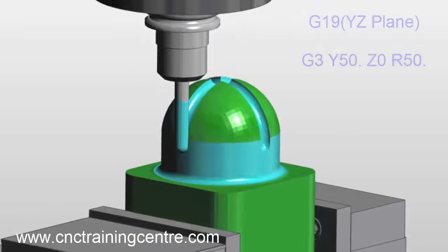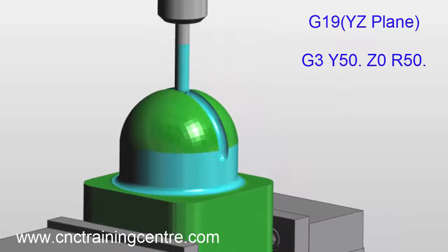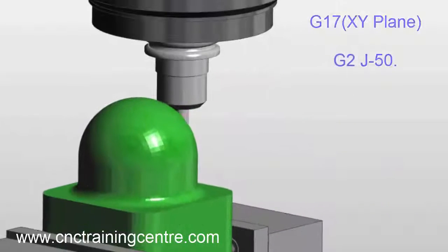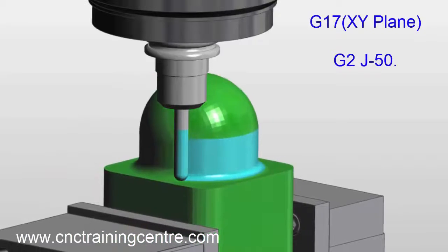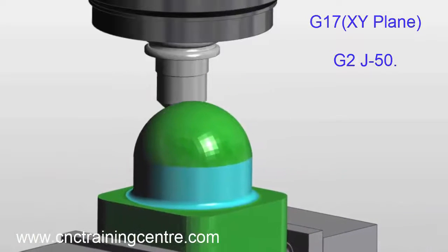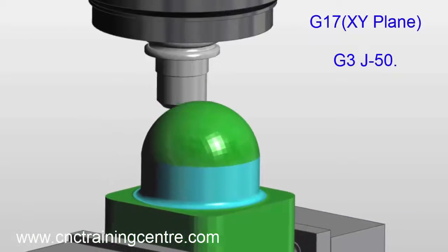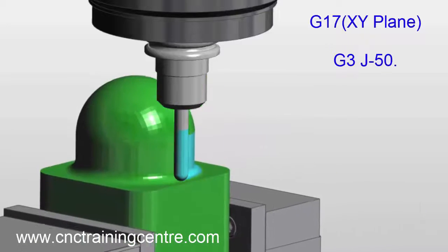First of all, this is the G17 plane, which is the XY plane. This is what you would see on a machining center when it's machining a normal standard flat circle.